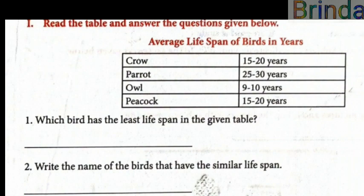Coming to Roman number one: Read the table and answer the questions given below. We have a table showing the average lifespan of birds in years. Crow: 15 to 20 years. Parrot: 25 to 30 years. Owl: 9 to 10 years. Peacock: 15 to 20 years. This is the lifespan of the birds.